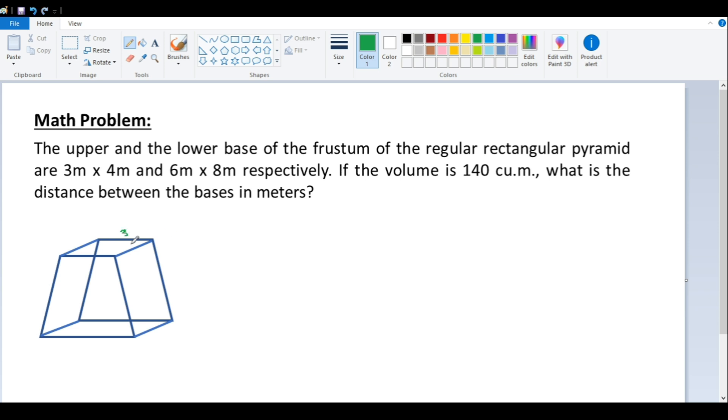So let's write here, this one is 3 and this one is 4, and 6 and 8. The height of the frustum of a regular rectangular pyramid - we're going to look for the h.